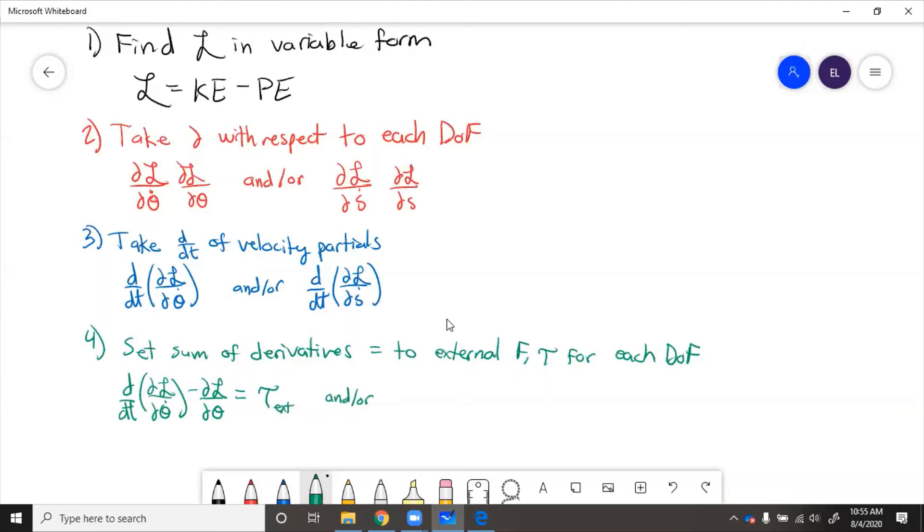So then in the linear case, you would have d dt del L del S dot minus del L del S equals external forces. So these external forces can include applied forces and friction.